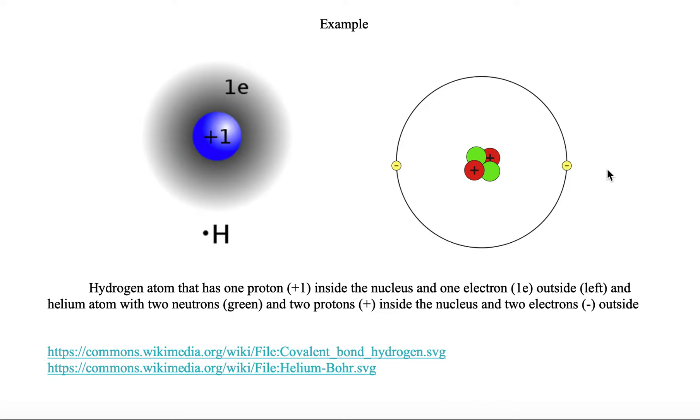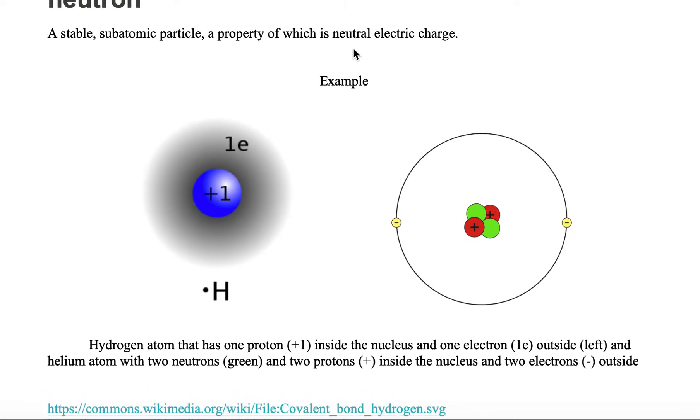Now, the neutrons are electrically neutral. That means they have no charge. Notice that the protons have positive charge, and the electrons have negative electric charge. But neutrons have no electric charge, so you don't see a plus symbol or a minus symbol.